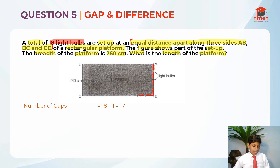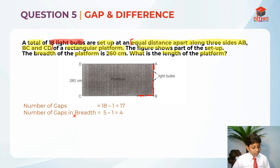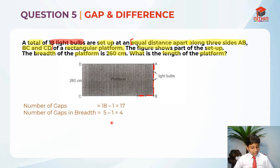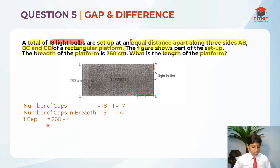Now that we understand the number of gaps, we can find the number of gaps in the breadth, which is 5 minus 1 = 4. We also know the breadth is 260 cm. Since there are 4 equal gaps in the breadth, we take 260 cm divided by 4, which gives us 65 cm per gap.